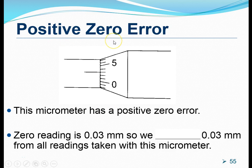The first one is a positive zero error. For a positive zero error, the zero mark on the thimble is below the datum line. If the third marking meets the datum line, this suggests that there is already a length of 0.03 millimeters present, even when the micrometer is not used to measure anything. To correct the reading, we will have to subtract this 0.03 millimeters from all readings taken with this micrometer.